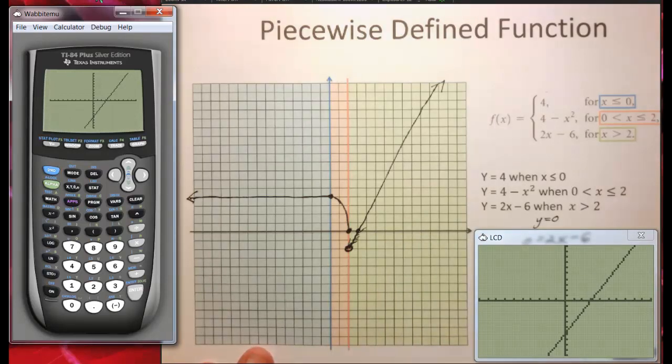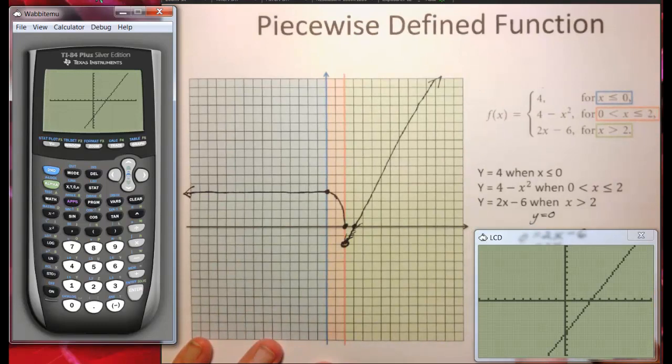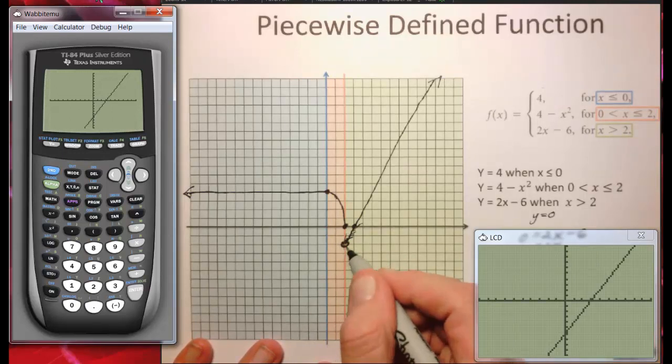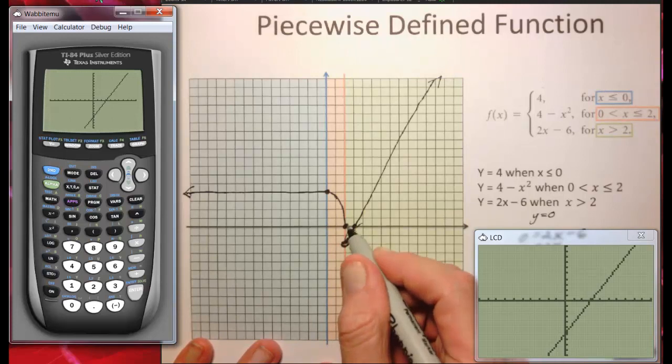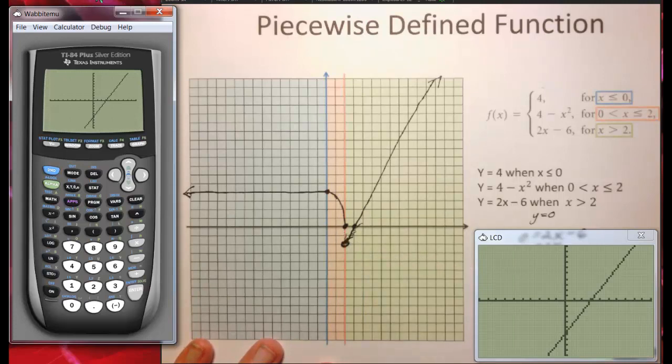So let's talk about domain and range while we're here. It ends up that the domain is going to be the entire x-axis. There are no gaps because even though this is a gap, this is filled in. This is an open circle. This is filled in. So x doesn't have a gap at all.